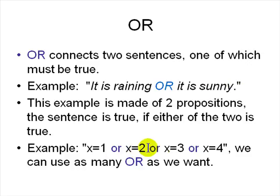x equal to 1 or x equal to 2 or x equal to 3 or x equal to 4 is a long statement. It has multiple or's in it. And it is true as long as at least one of them is true. We'll see how to parse the sentence later on.